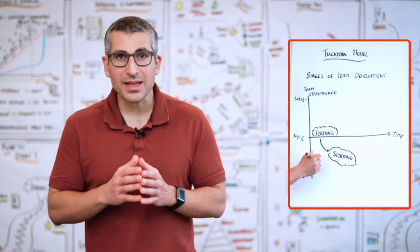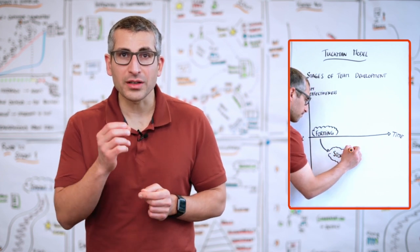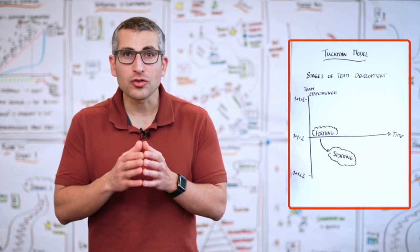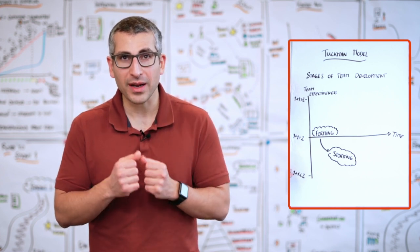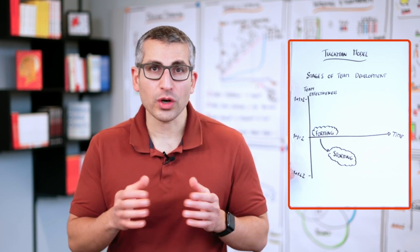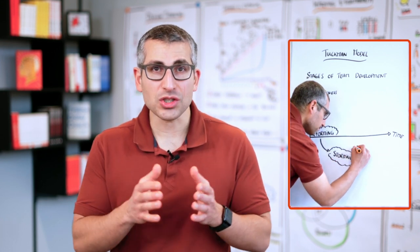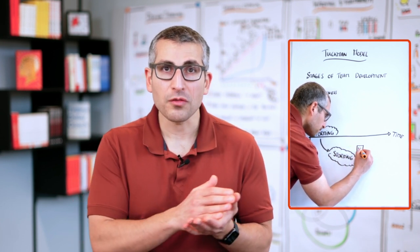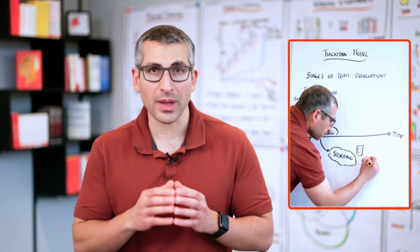The storming phase is a great opportunity to understand what are the things that you need to tackle first to make your team more effective. Once you identify those things, once you start creating working agreements, once you teach everyone about their role, about their responsibilities, the team moves from storming into norming.